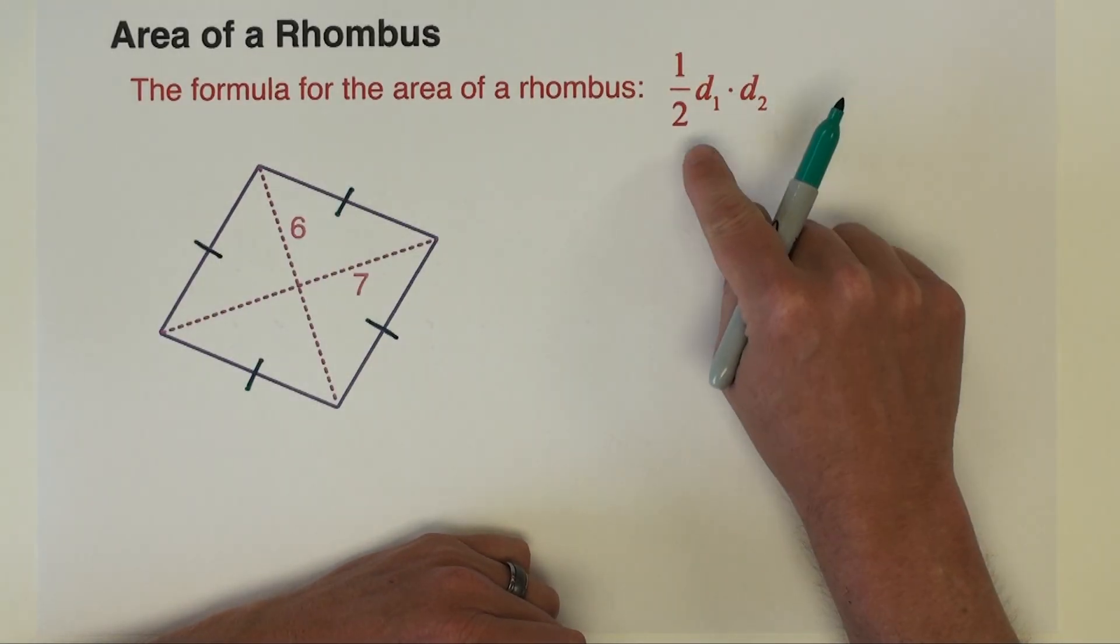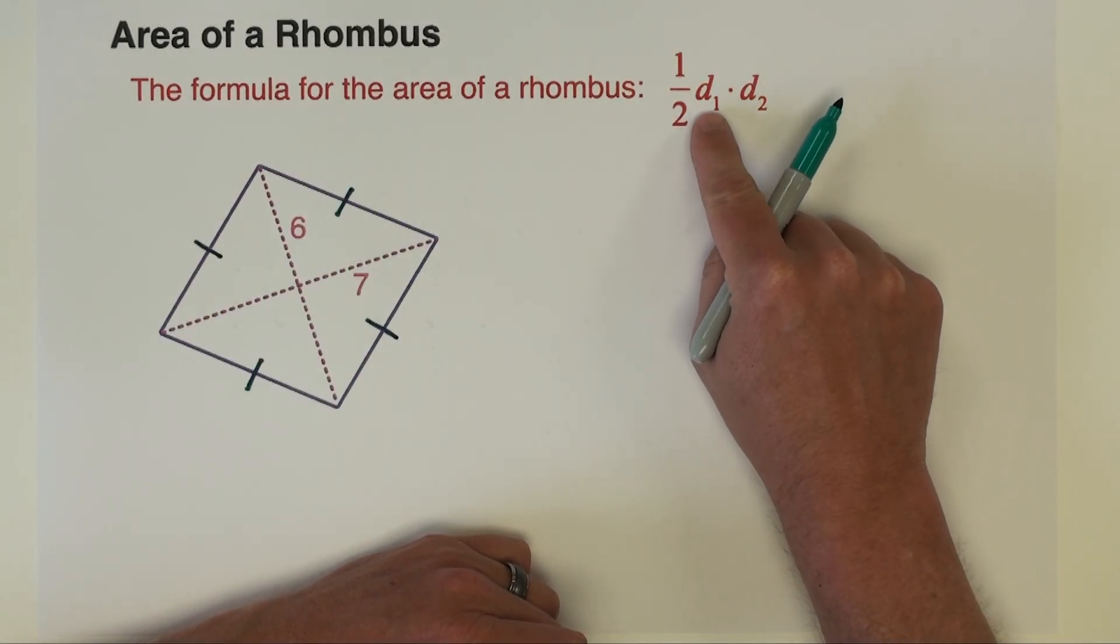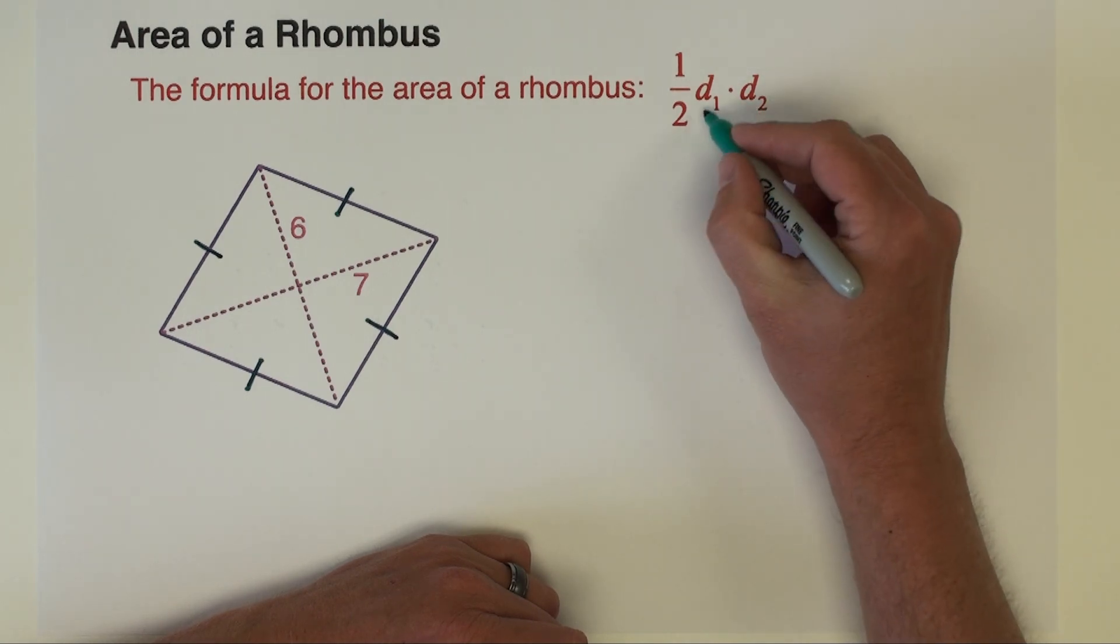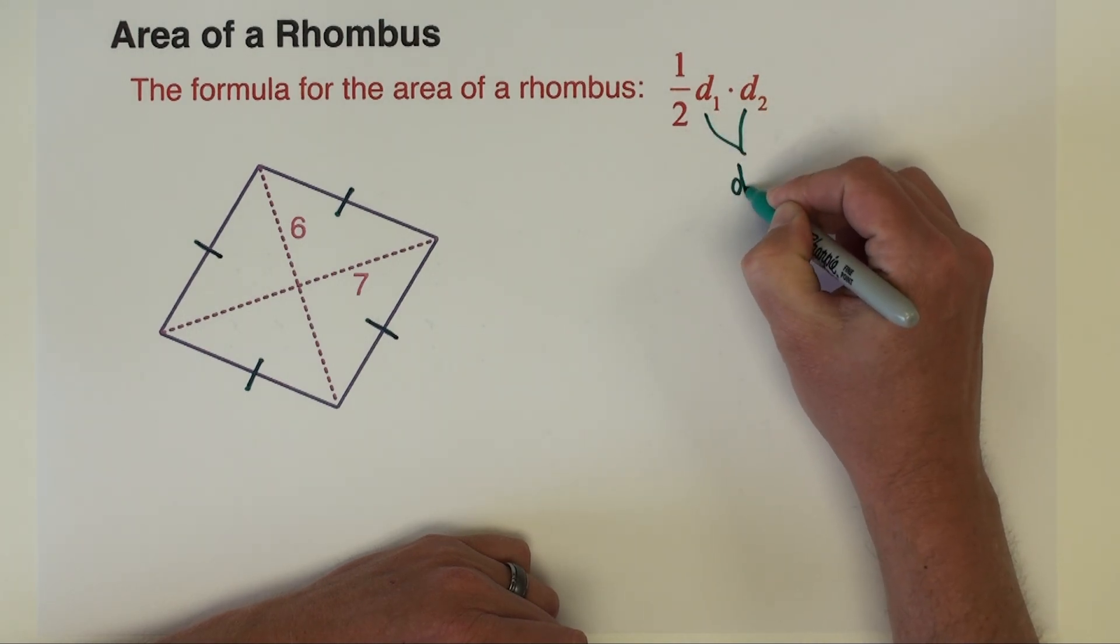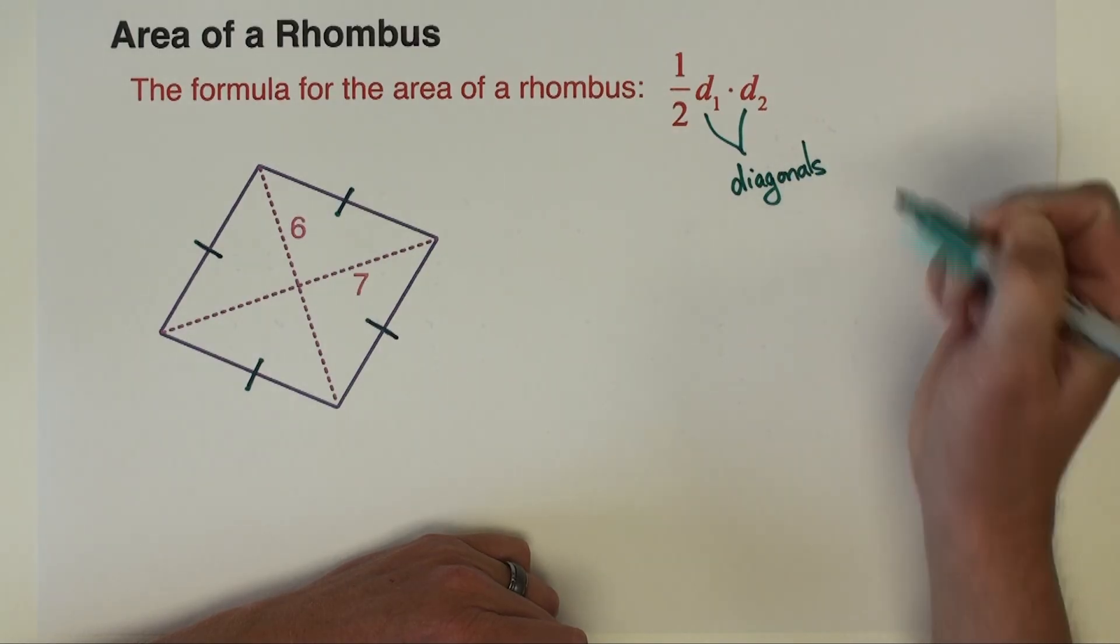Okay, so our formula for how to find the area of a rhombus is one half d1 times d2. The d1 and the d2 are the diagonals of the rhombus.